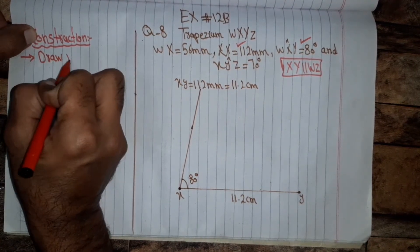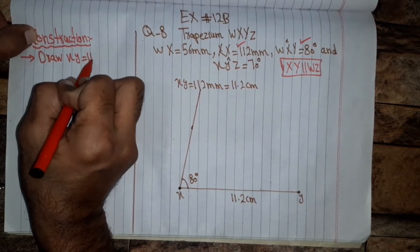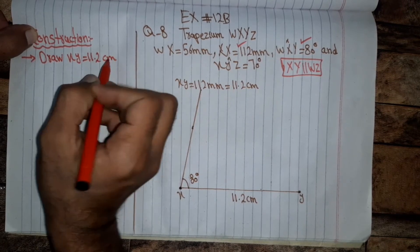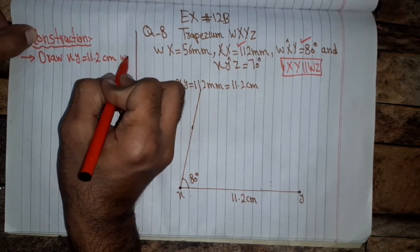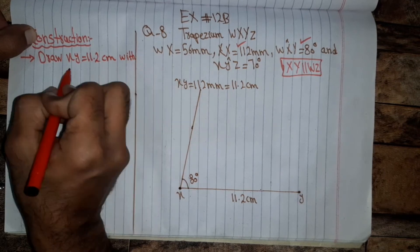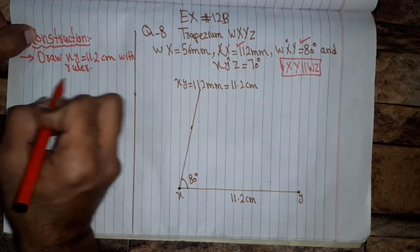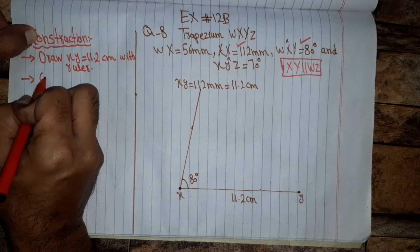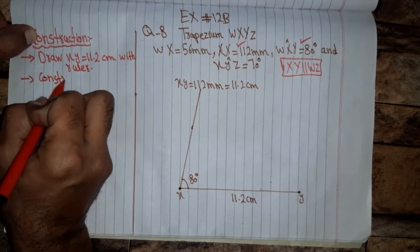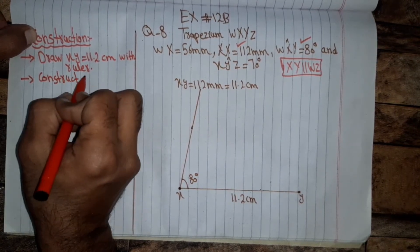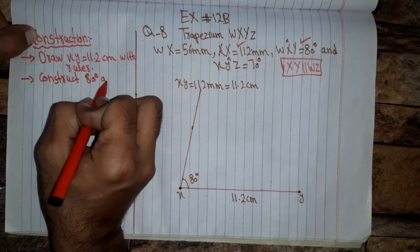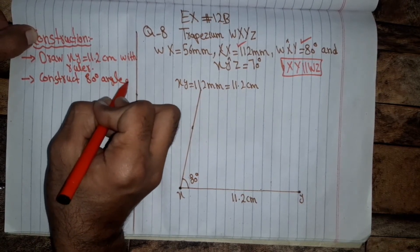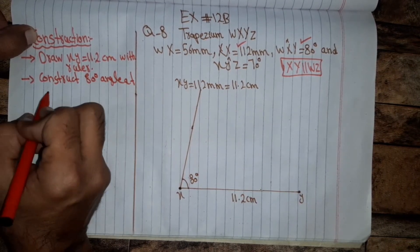Angle with rulers construct 80 degree angle at point X.